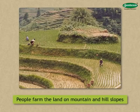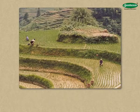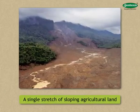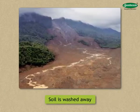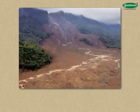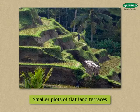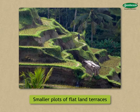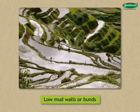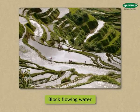In some places, people farm the land on mountain and hill slopes. It is necessary to take special care to prevent soil erosion of the fertile land there. If there is a single stretch of sloping agricultural land, a lot of soil is washed away with the flowing water. Therefore, such a stretch of land is divided into smaller plots of flat land called terraces. Low mud walls or bunds are built on the outer sides of these plots to block flowing water, which prevents soil erosion.